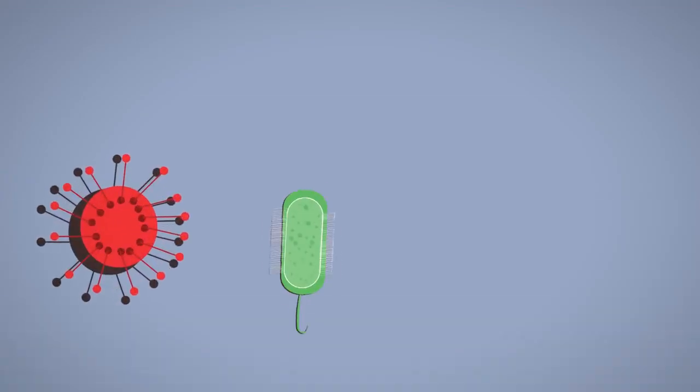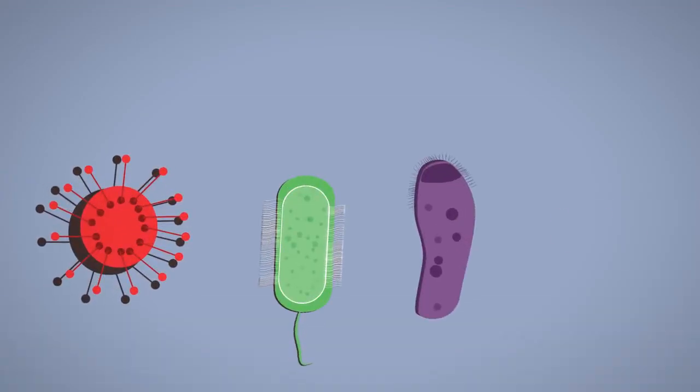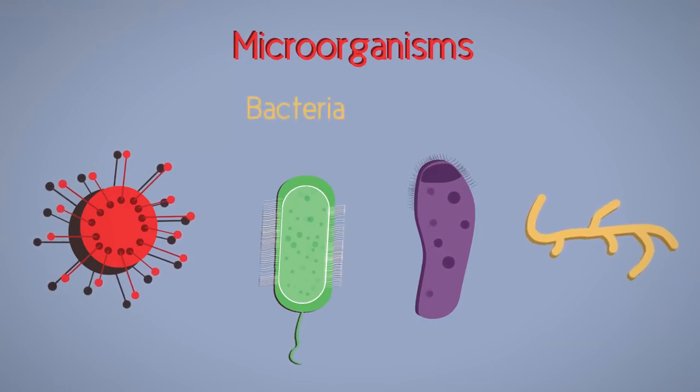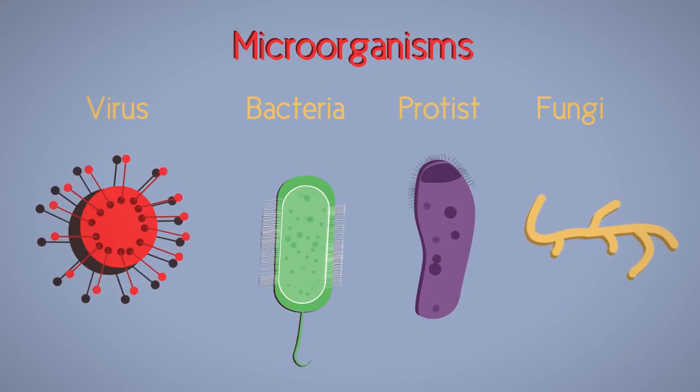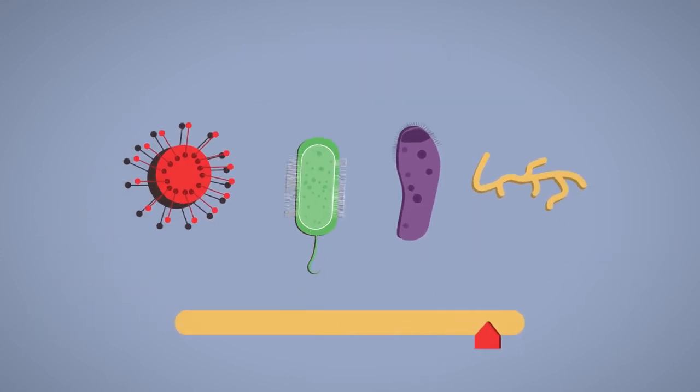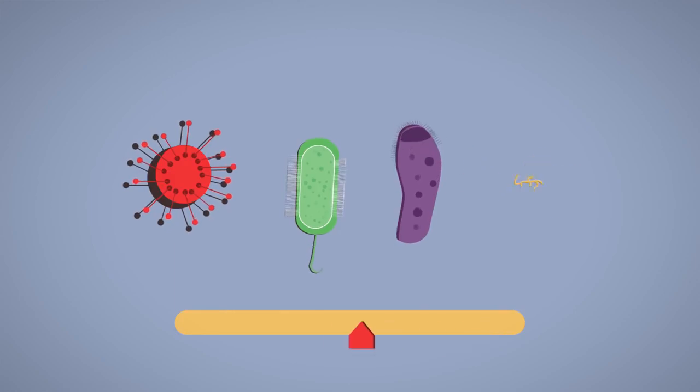So from this video, you should know that pathogens are disease-causing microorganisms, and can be a bacteria, virus, fungi, or protist. They are transmitted in many different ways, and depending upon their mode of transmission determines how they can be controlled.